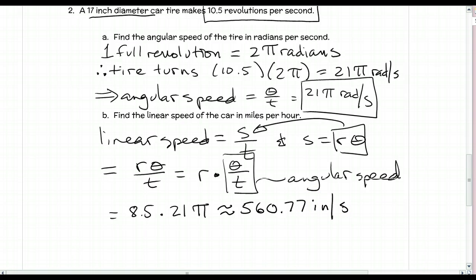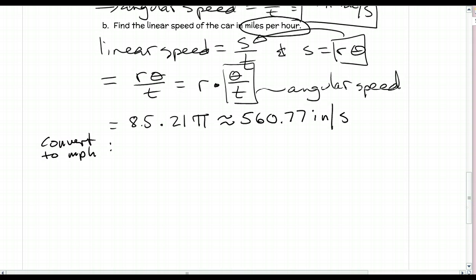We're not done yet because our units are inches per second, and we want miles per hour. I've got 560.77 inches per second, 60 seconds in one minute, and 60 minutes in one hour.